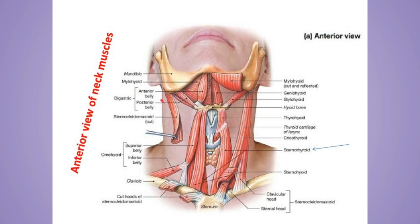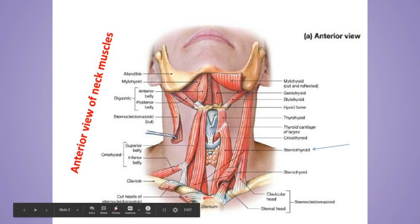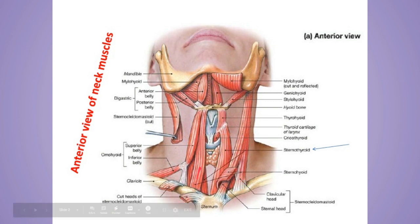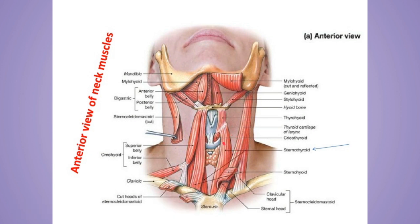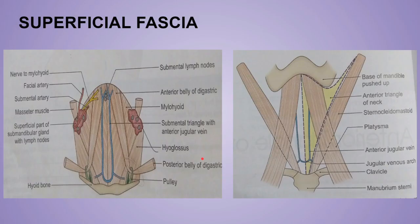This is the sternocleidomastoid muscle, the SCM, having two insertions on the sternum and clavicle. Below this there is the sternothyroid muscle, the thyrohyoid muscle, and the omohyoid muscle — with its superior belly and inferior belly — and the thyroid gland.